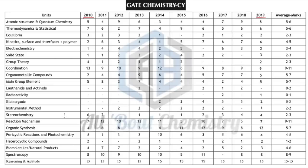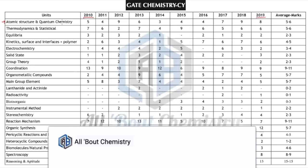I have taken data from the last nine years and also taken the average marking. From this average marking you can see which topics to focus on more. Starting with physical chemistry, the first topic is atomic structure and quantum chemistry, which covers the major portion of physical chemistry.